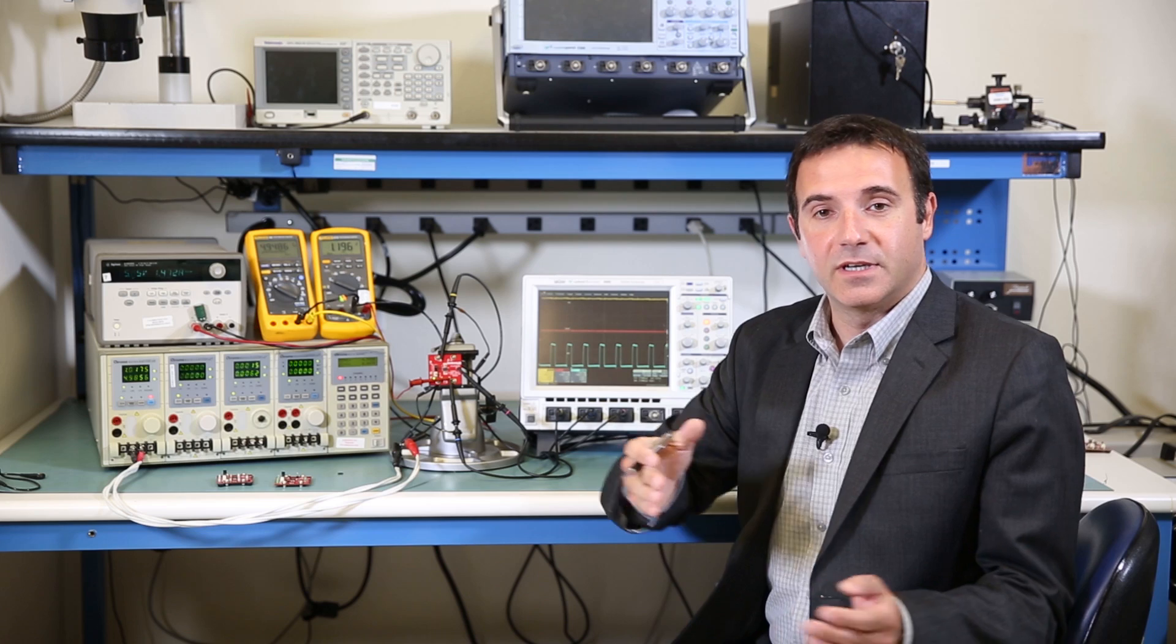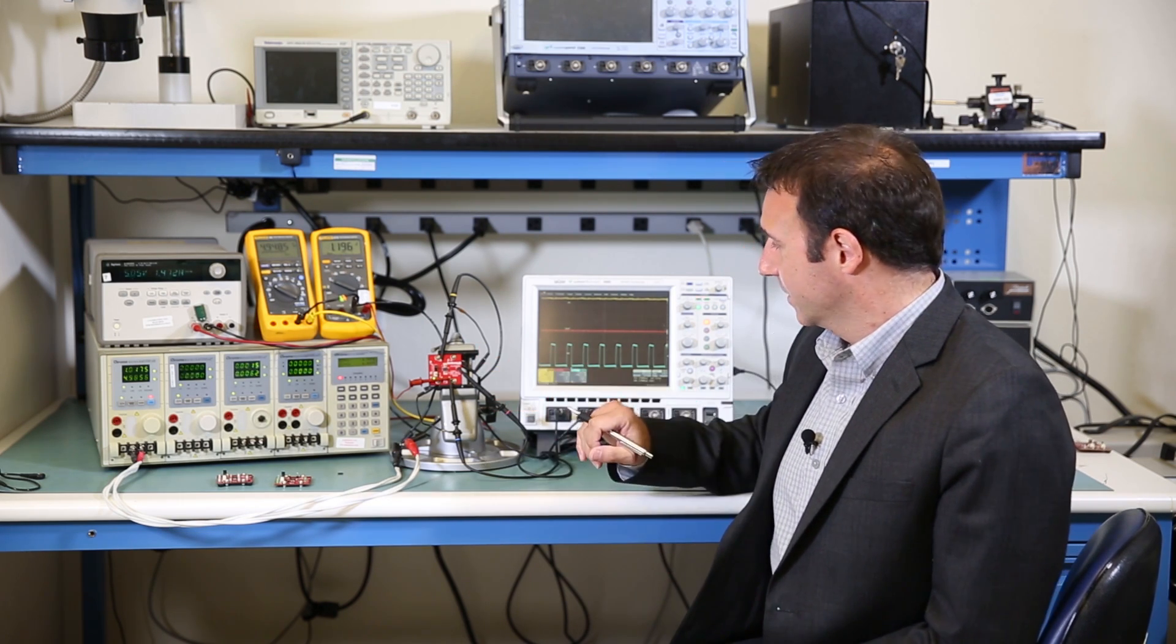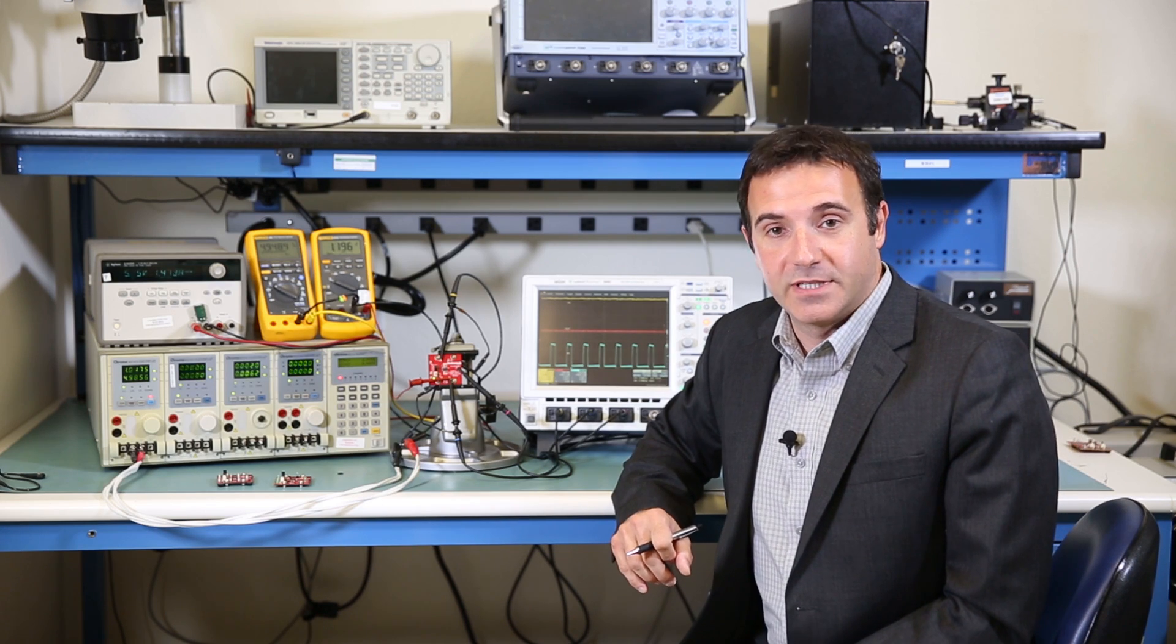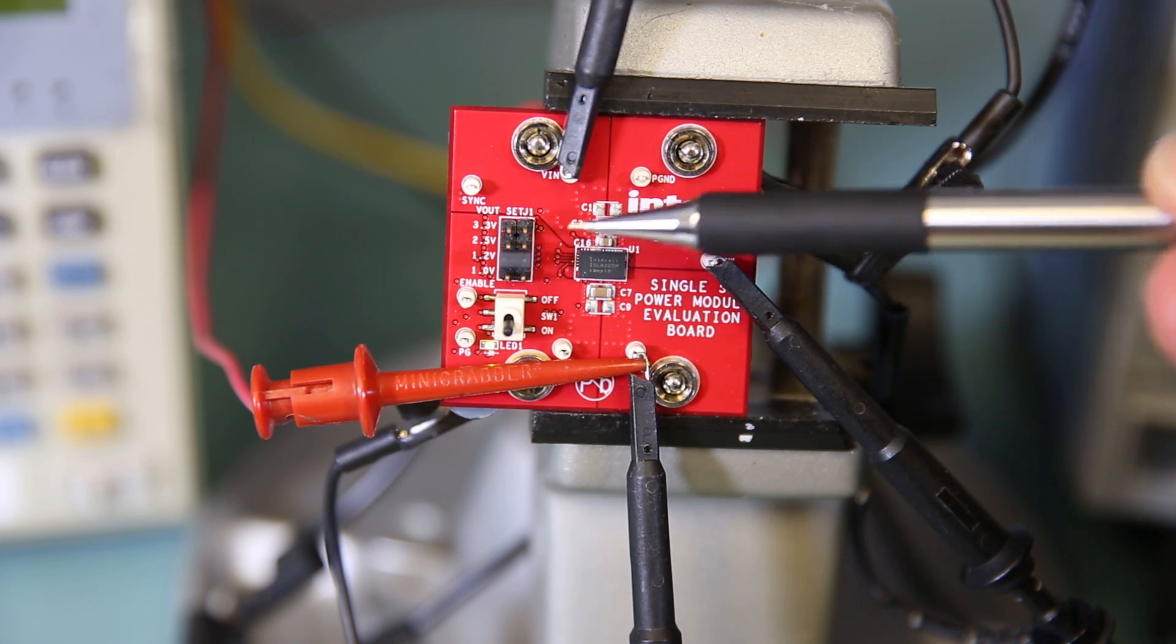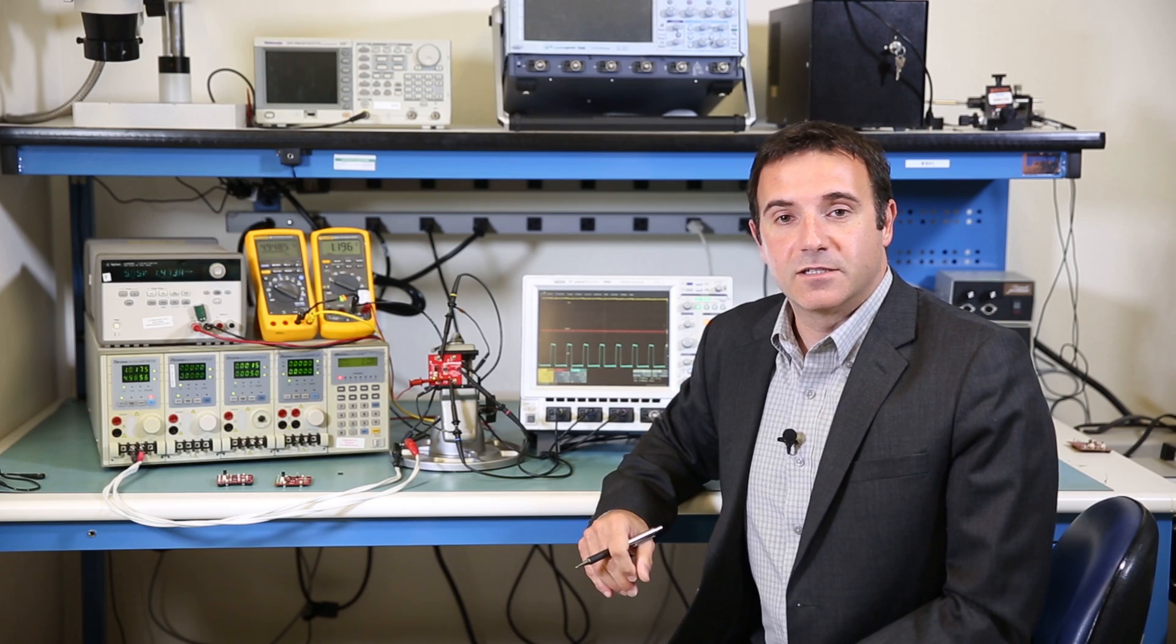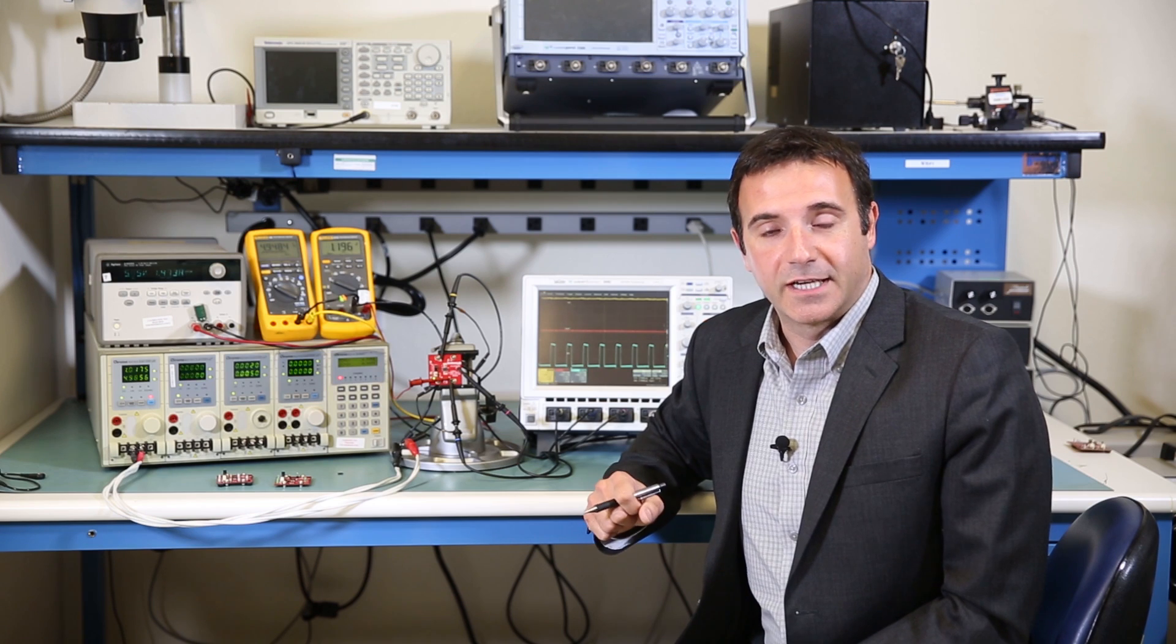This device supports anywhere from 2.6 volt to 5.5 volt input voltage range. The output voltage range can be as low as 0.6 volts. The evaluation board, as a matter of fact, provides you with an easy setting that selects some of the most common output voltages used in the electronic industry.